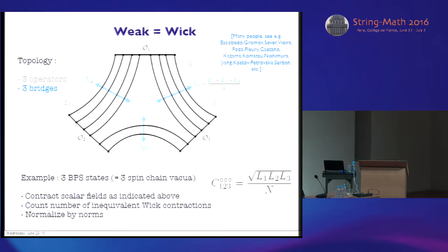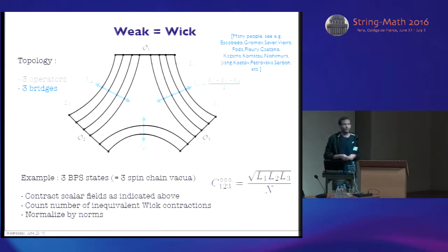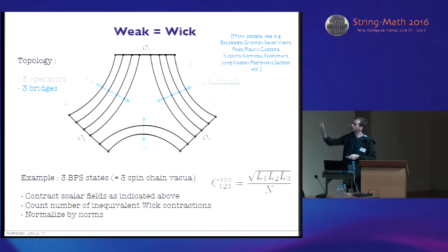So from there to the final answer, it's really just a combinatorial problem — an extremely simple combinatorial problem — and it gives this very nice expression, which was derived by Okounkov and collaborators a long time ago. What I want you to take from it is that this vertex we are dealing with can be thought of as being made of two splitting points.